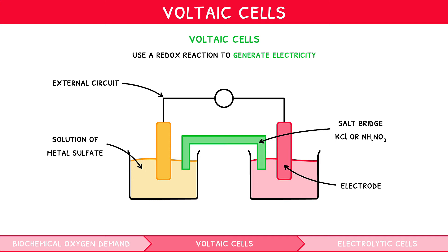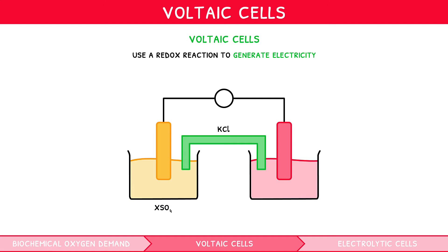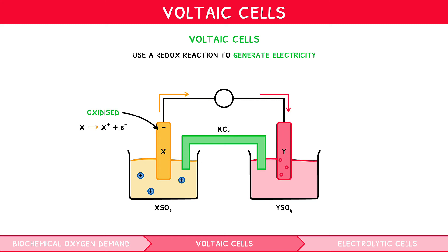But how do they work? Oxidation at one electrode causes reduction at the other. Consider a general voltaic cell with a potassium chloride salt bridge, made from XSO₄ solution on the left with an electrode made of X, and YSO₄ on the right with an electrode made of Y, where X and Y denote two metals. Assuming metal X is oxidised, the reaction at the left electrode is X → X⁺ + e⁻. This results in the accumulation of positive ions in solution and negative electrons on the electrode, making it negatively charged. These electrons flow through the external wire to the other electrode, where they are used to reduce ions of Y in solution, forming metal Y, via the reaction Y⁺ + e⁻ → Y.